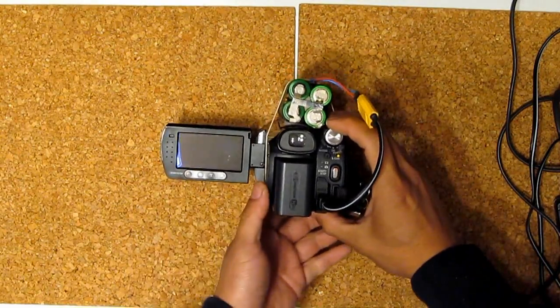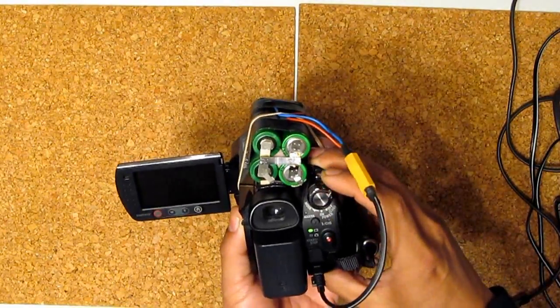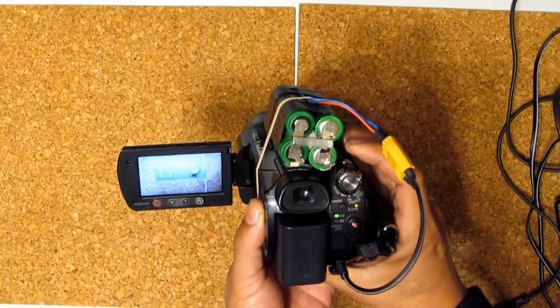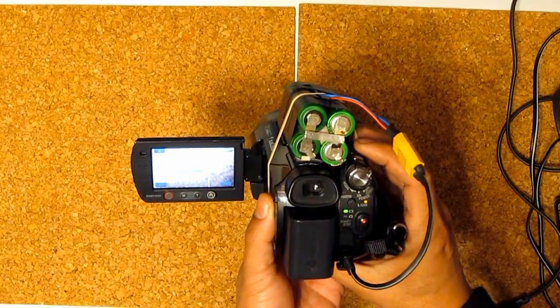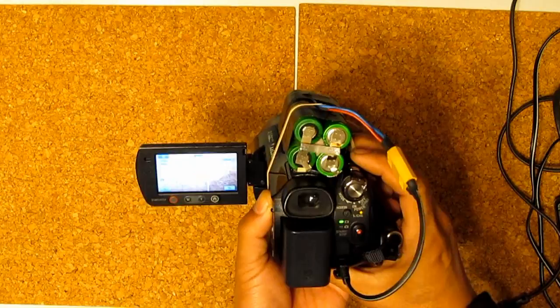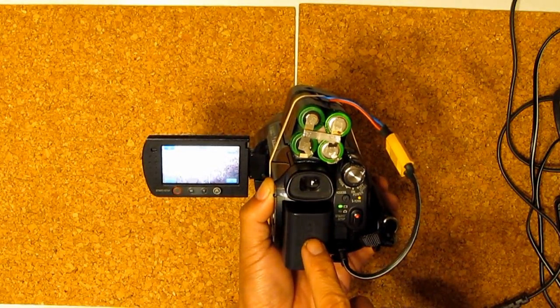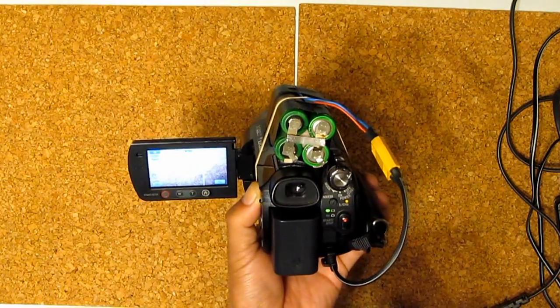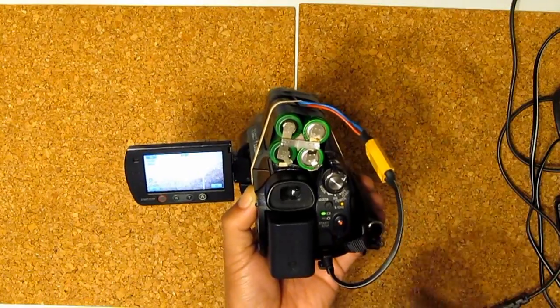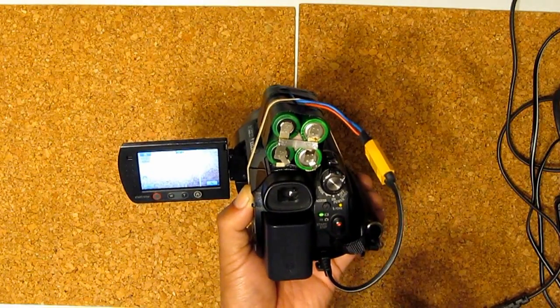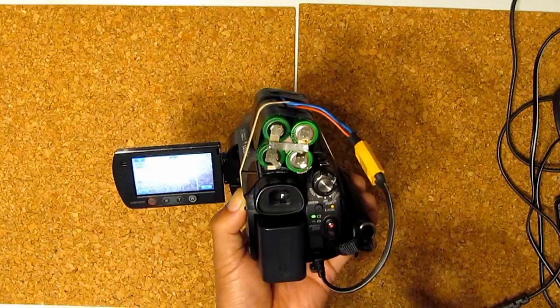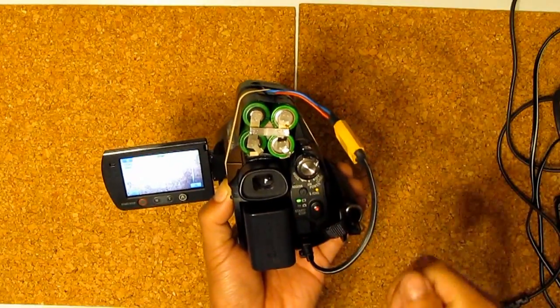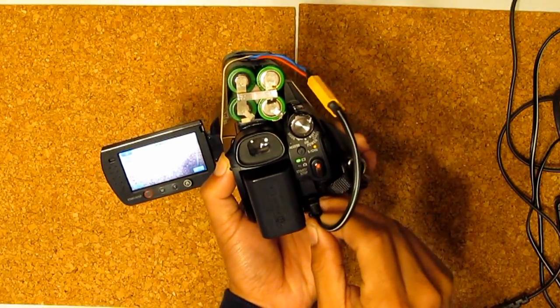But let's turn it on again. There you go, it's on. As you can see here, even though this battery is installed, the screen doesn't show the battery icon. That's because the camcorder is still thinking it's plugged in to a wall outlet. And it's using the power from the external pack right now, not the internal pack. So let me unplug it and see what happens.